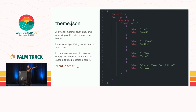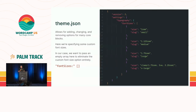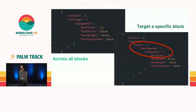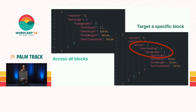theme.json allows us to add, change, and remove certain features. In this case, we've got typography settings for font sizes — in the screenshot there are a few preset font sizes, but in our example we don't want that, so we pass an empty array, which gets rid of that setting. You can also control things on a global basis or a per-block basis. On the left, it takes effect wherever those controls appear on any block. On the right, it only takes effect on the core heading block because it's nested under there.